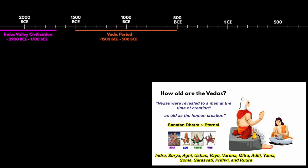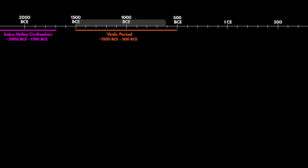Vedic people worshipped Vedic Gods and Goddesses. Some major deities of the Vedic period include Indra, Surya, Agni, Usha, Vayu, Varun, Mitra, Aditi, Yam, Soma, Saraswati, Prithvi, and Rudra. Iron Age emerged during the Vedic period — the Indus Valley Civilization was a Bronze Age society — so the Vedic period covers both the end of the Bronze Age following the collapse of the Harappan civilization and the beginning of the Iron Age.